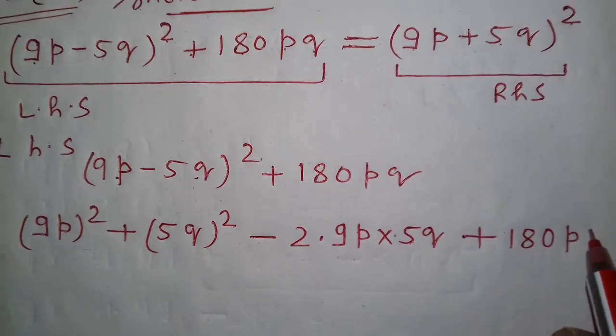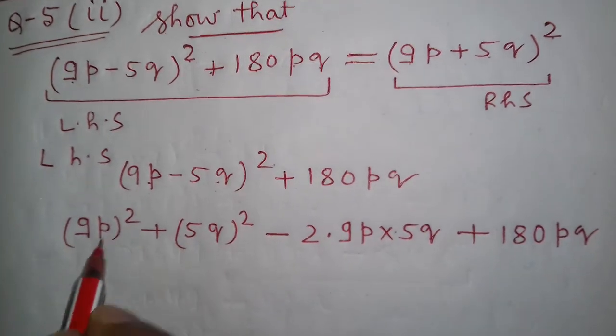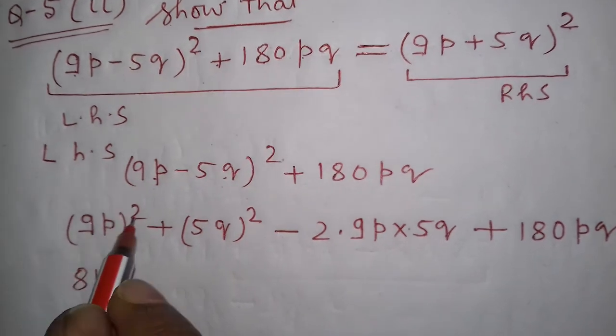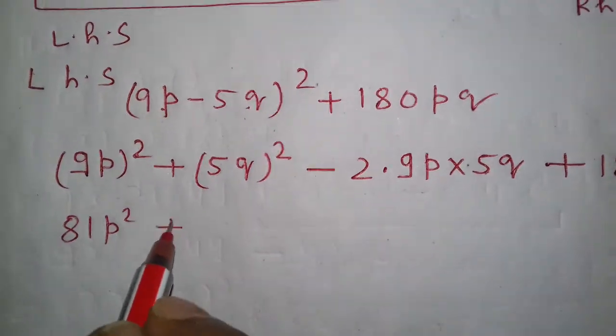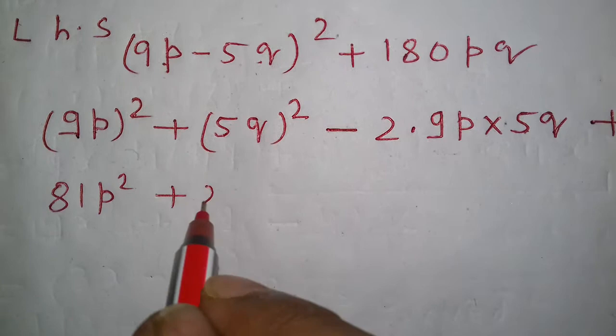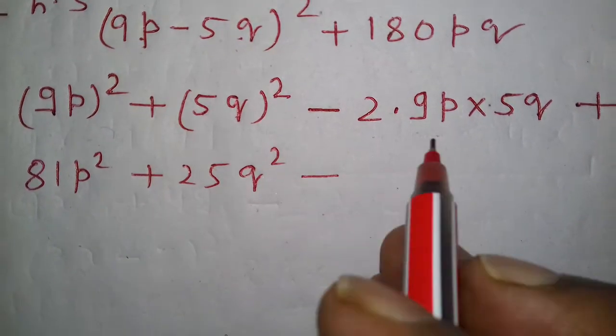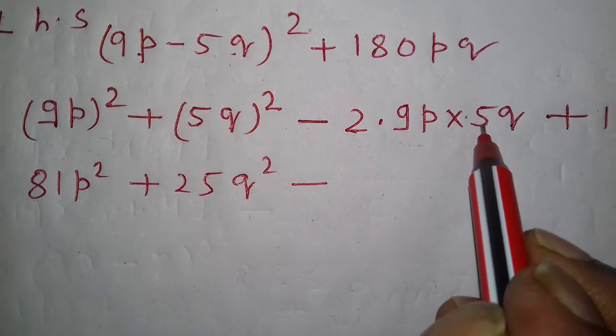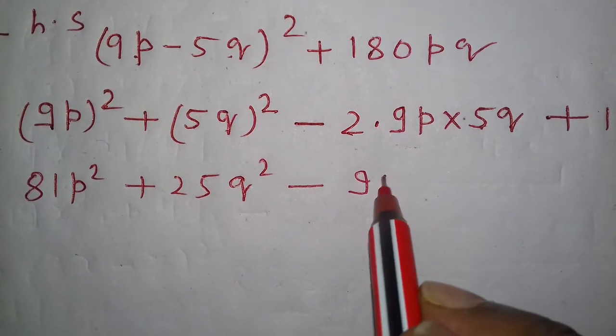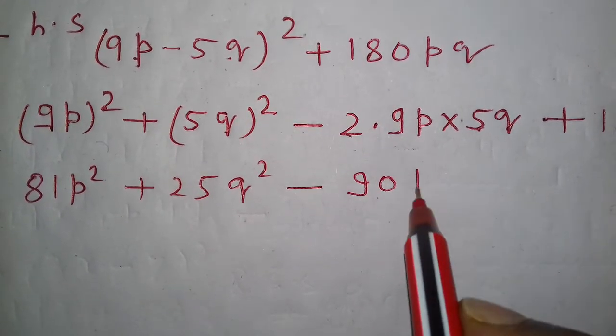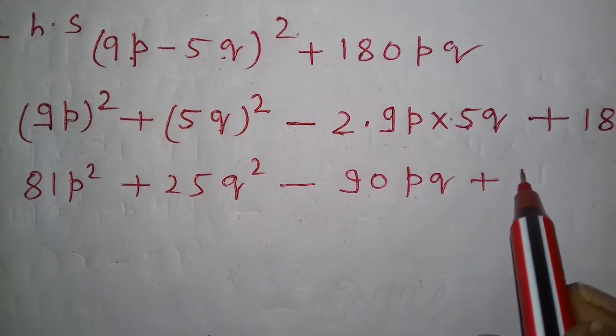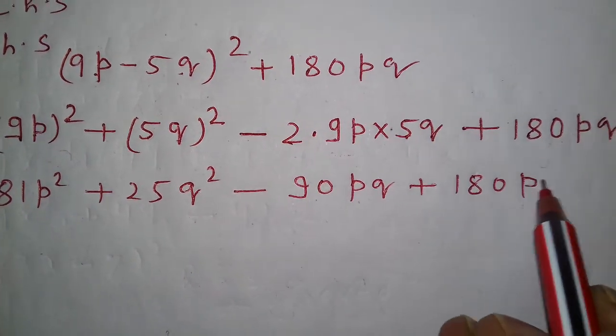Plus 180pq. 9 squared is 81p², plus 5 squared is 25q², minus 2 times 5 times 9, which is 90pq, plus 180pq.